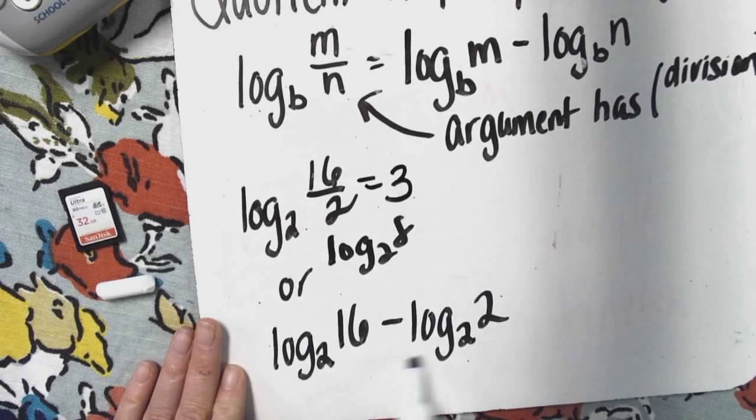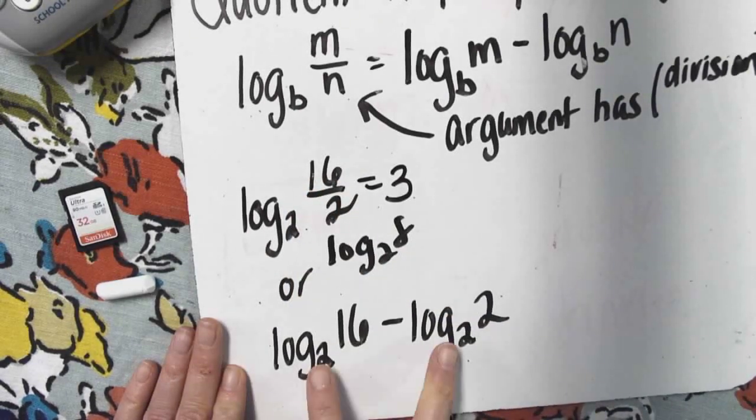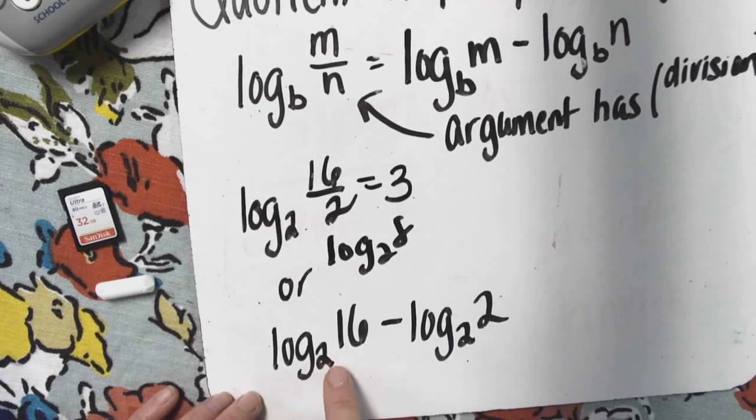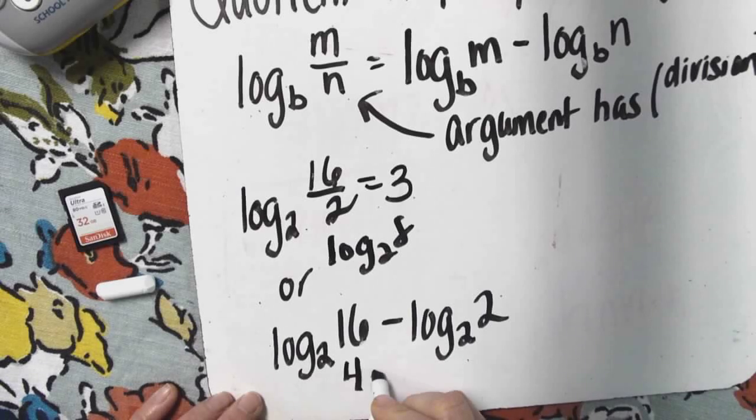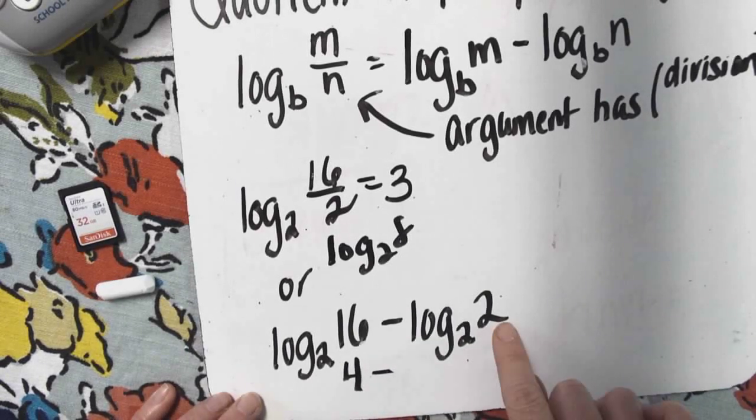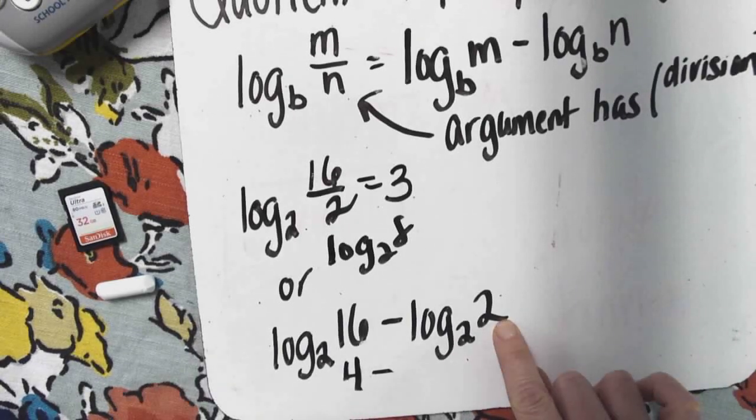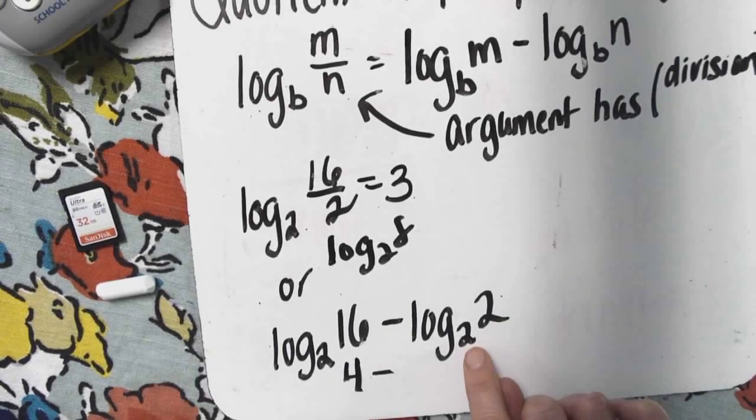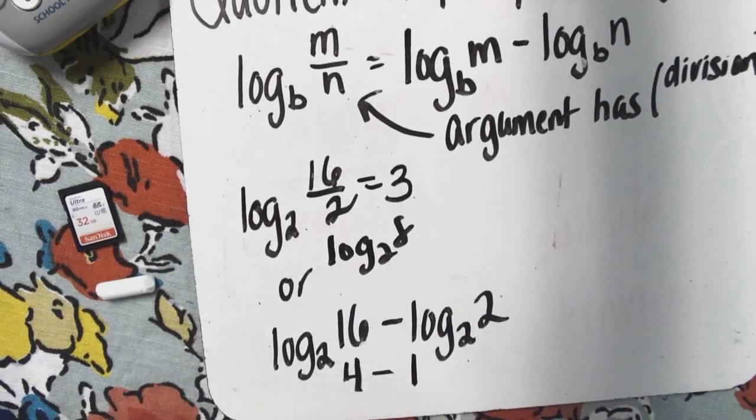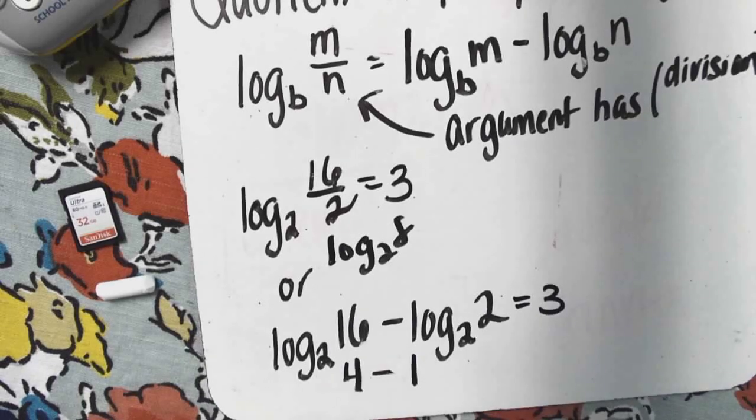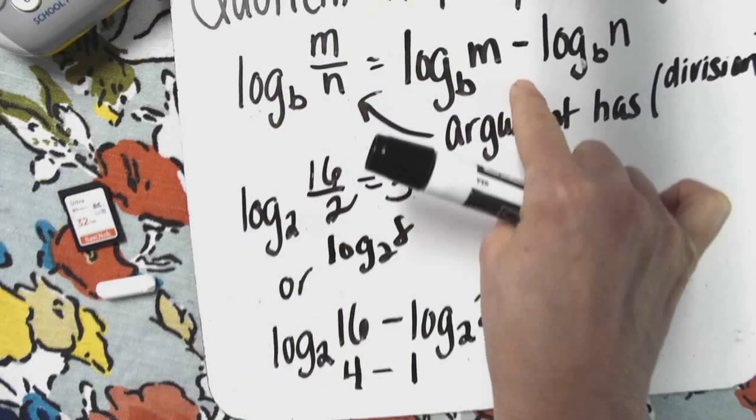Let's see if I get 3 when I take that fraction and make it subtraction with 2 logs. Log base 2 of 16 is 4 minus log base 2 of 2. Remember when the base and the argument are the same it equals 1. 4 minus 1? You're getting the same answer. So again, fraction subtraction.